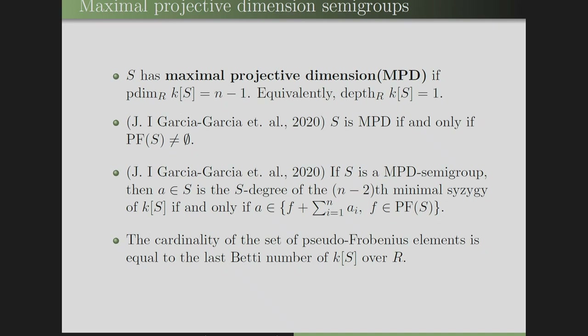They also proved that if S is an MPD semi-group, then A in N^D is the S-degree of an (N−2)-th minimal syzygy if and only if A belongs to PF(S). Furthermore, the cardinality of PF(S) equals the last Betti number of K[S] over R.